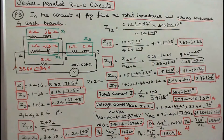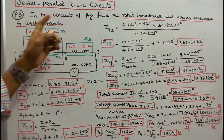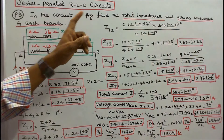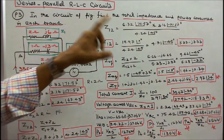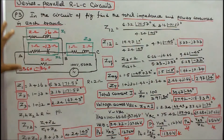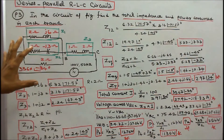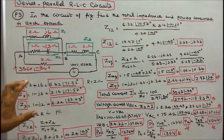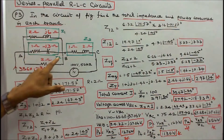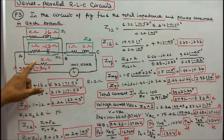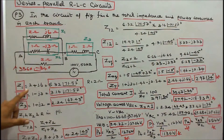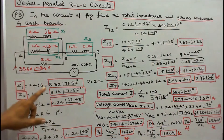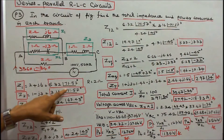Problem number 3. In the circuit of figure, find the total impedance and power consumed in each branch. This circuit consists of three impedances Z1, Z2, Z3 and a 2-ohm resistor. Z1 = 2 + j6 in rectangular form; in polar form, 6.32∠71.57°.